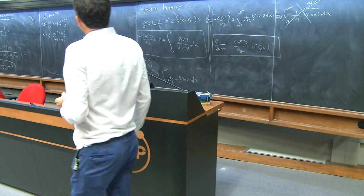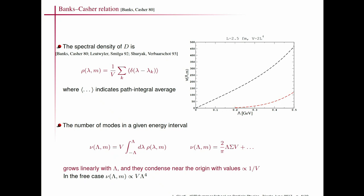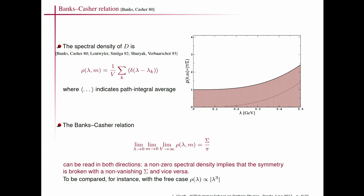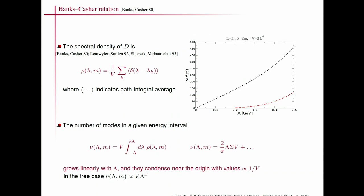One can define the integrated spectral density: the number of eigenvalues of the Dirac operator between −λ and +λ, for instance between ±50 MeV or ±100 MeV. This is called the mode number. Using the derivation relating the spectral density to chains of pseudoscalar densities, one can prove the mode number is renormalizable. This is the practical quantity that can be computed numerically on the lattice to verify the Banks-Casher relation and ultimately confirm spontaneous chiral symmetry breaking in QCD.